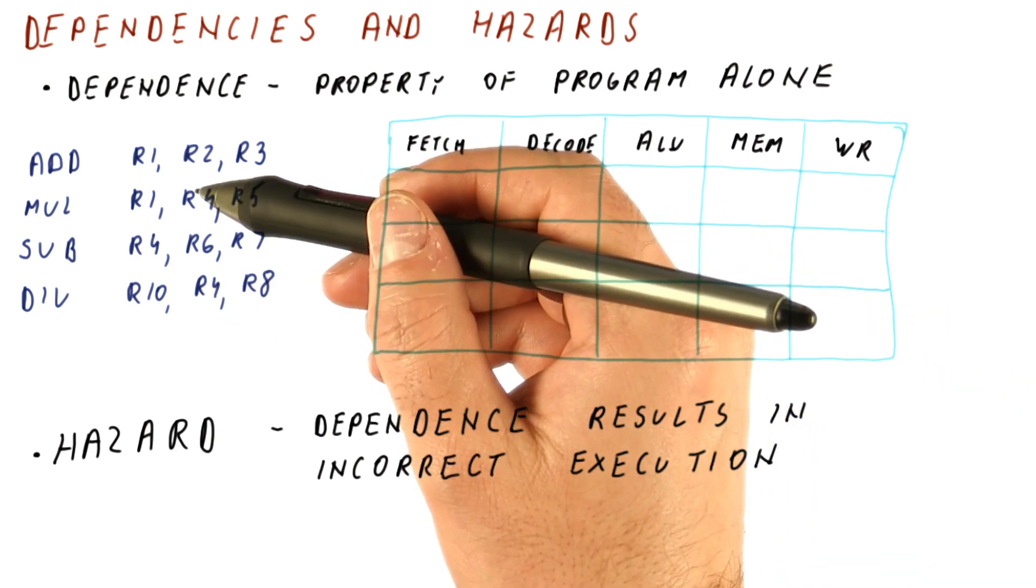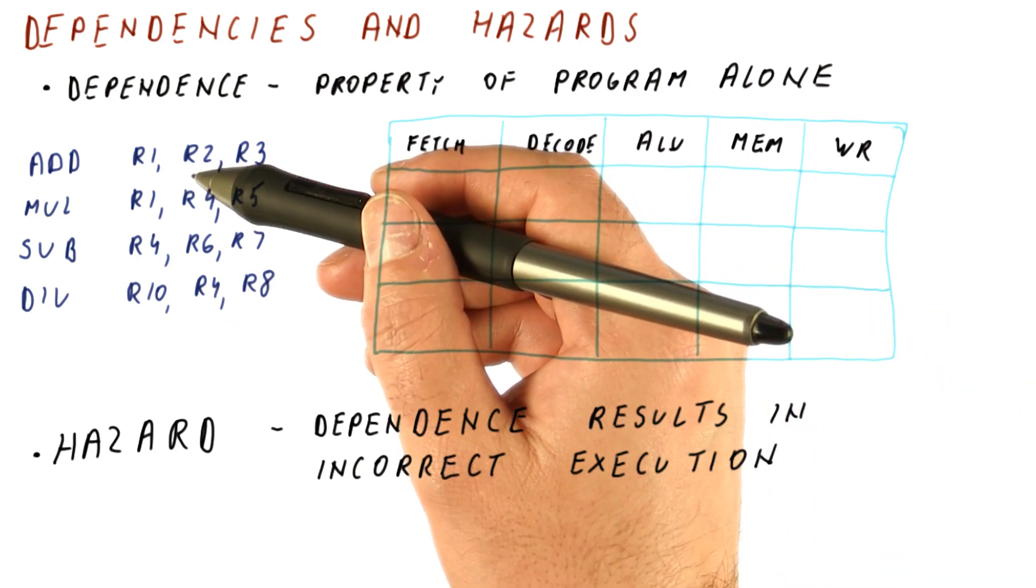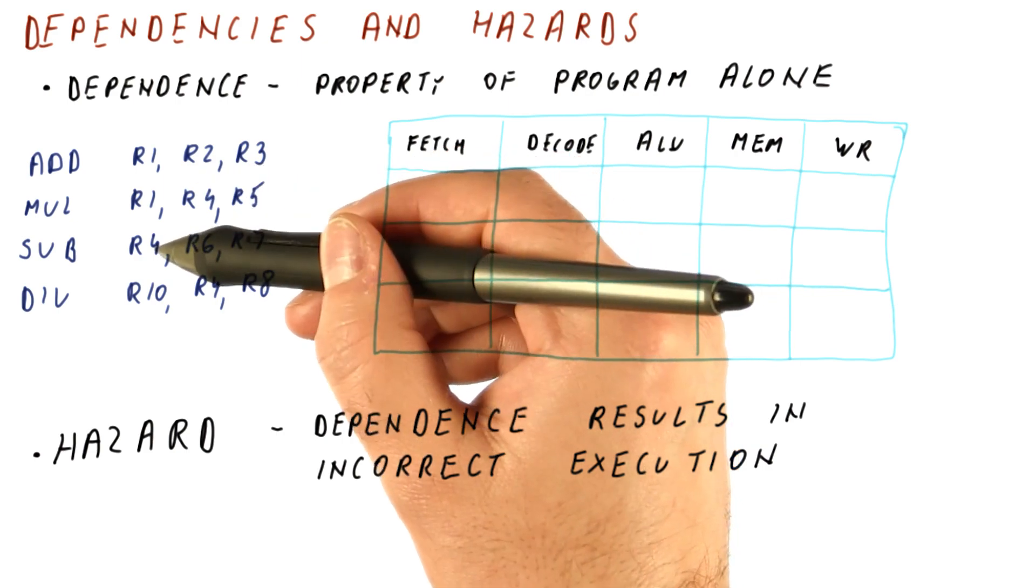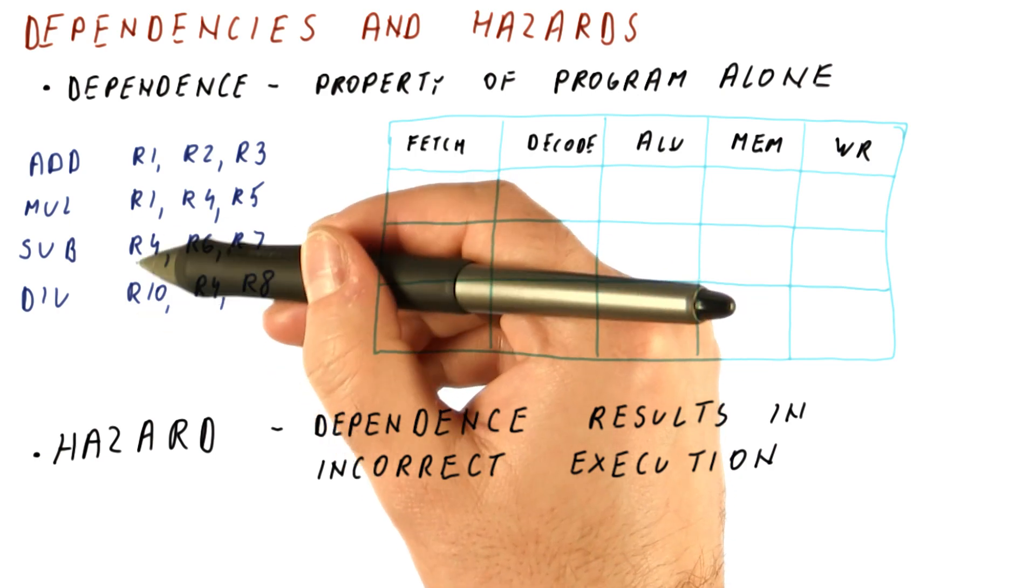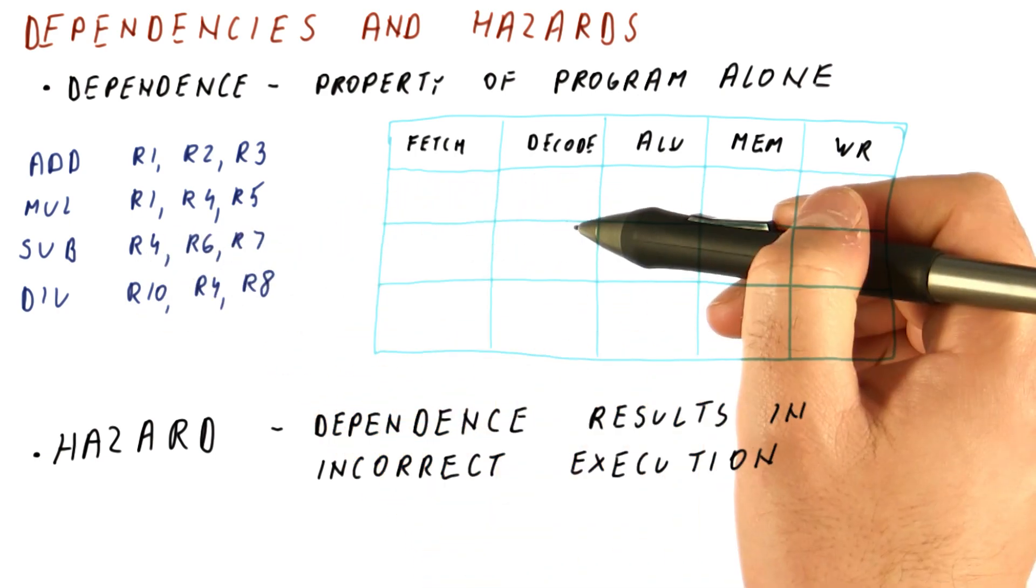Now I will show you that not all true dependencies are hazards in this pipeline. In this case, we have seen that a dependence between consecutive instructions creates a hazard in this pipeline.